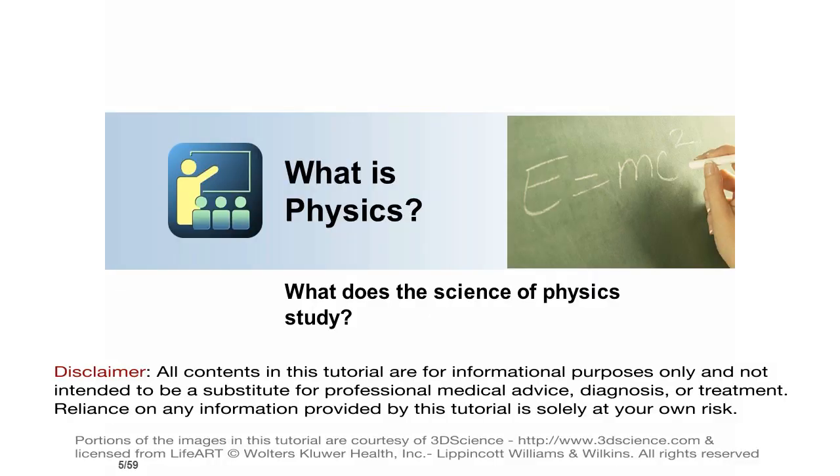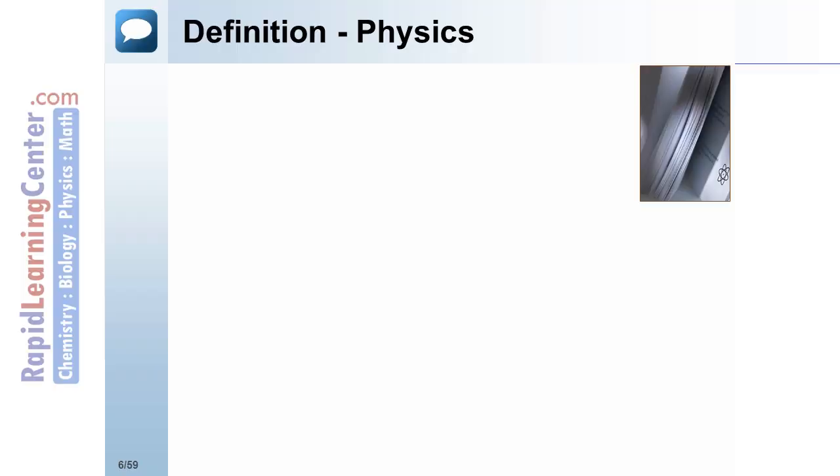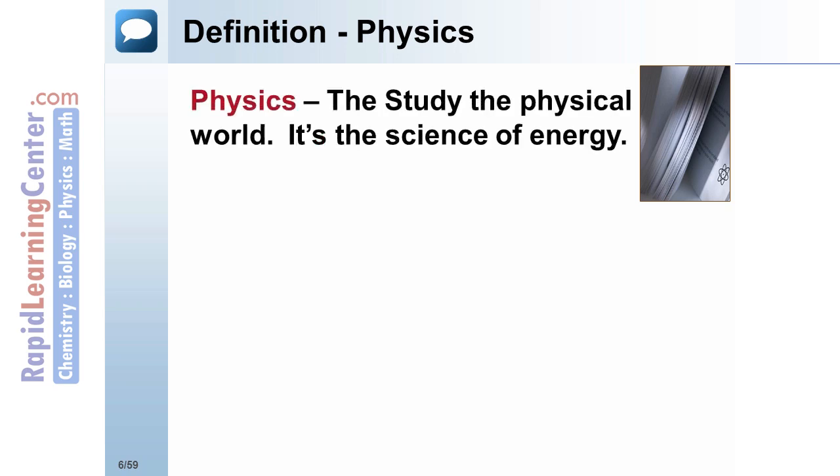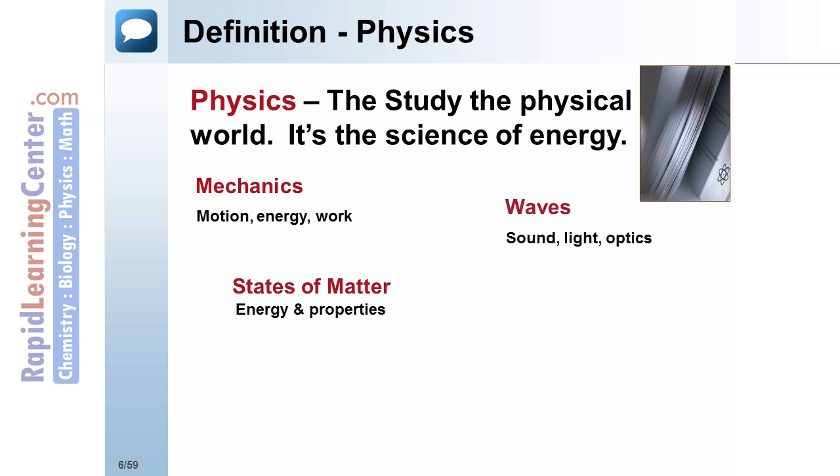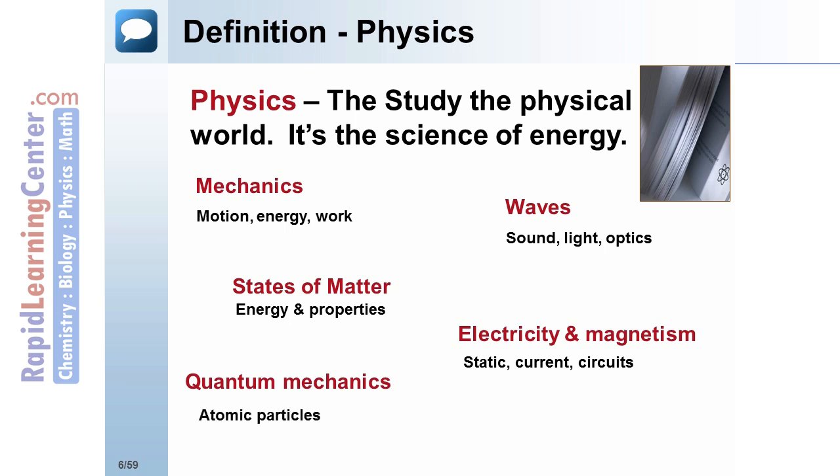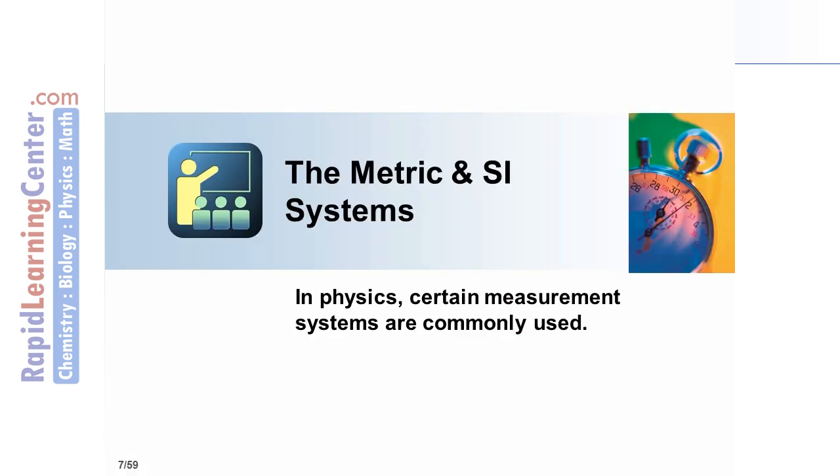What is physics? What does the science of physics study? Definition: Physics—the study of the physical world, the science of energy. This includes mechanics, states of matter, waves, electricity, magnetism, and quantum mechanics. In physics, certain measurement systems are commonly used, including the metric and SI systems.